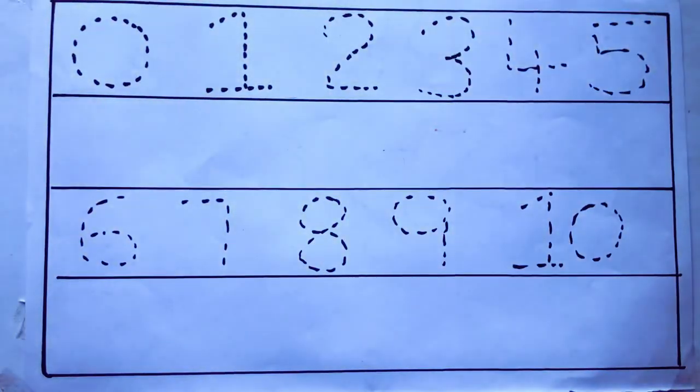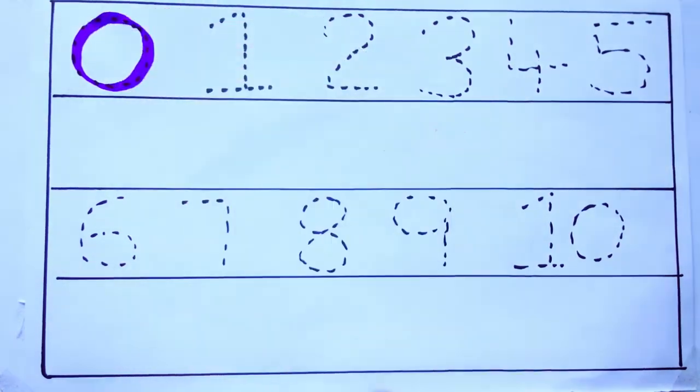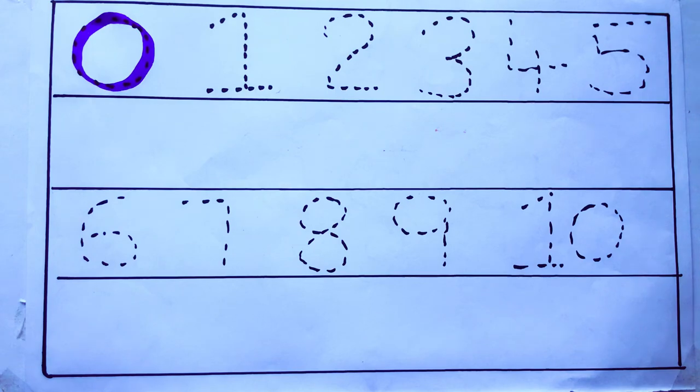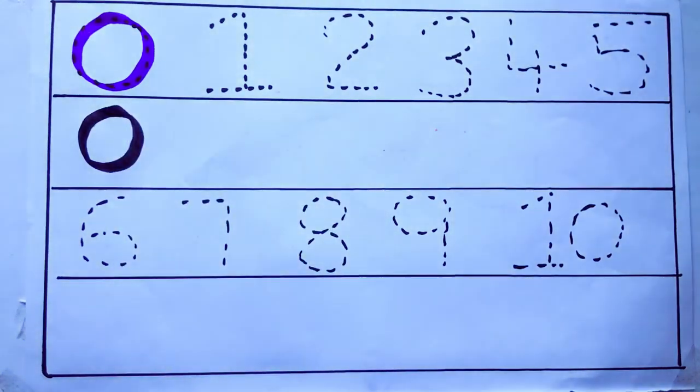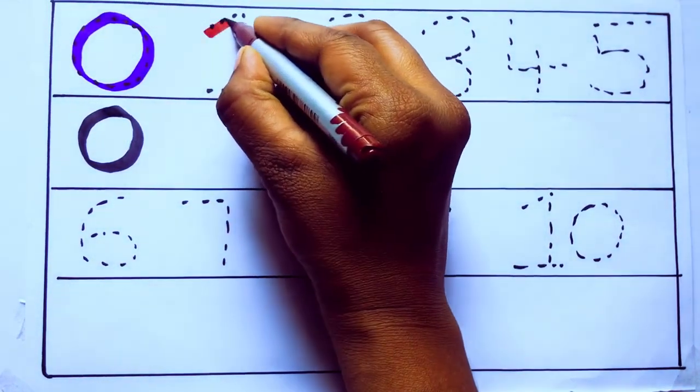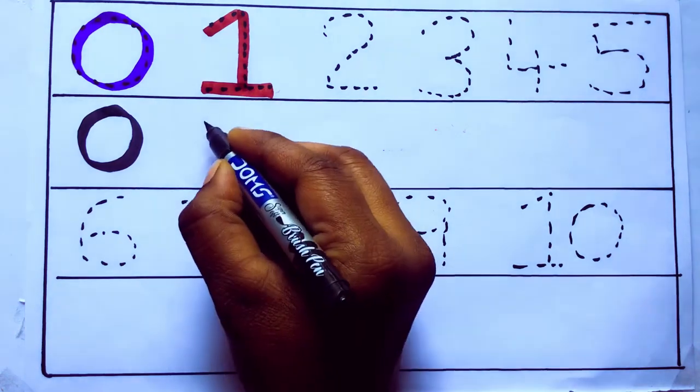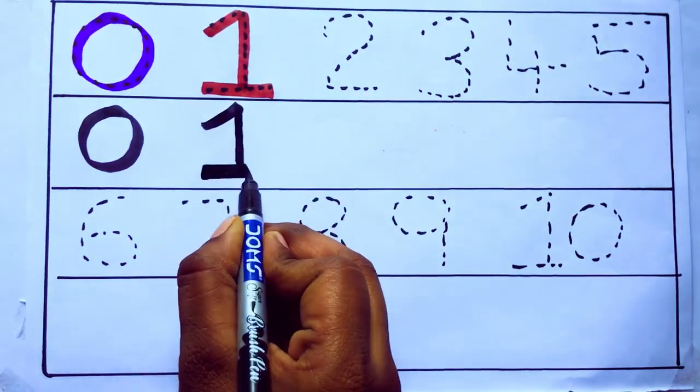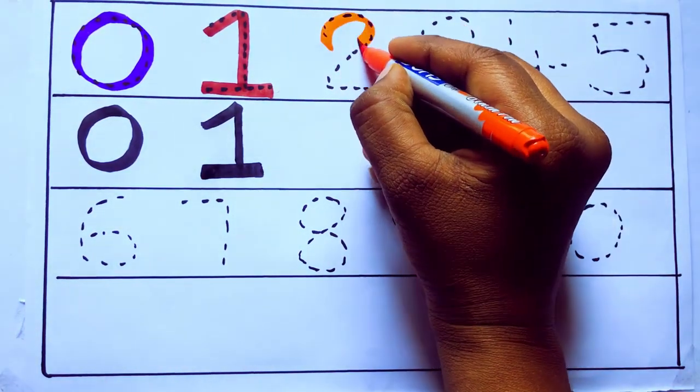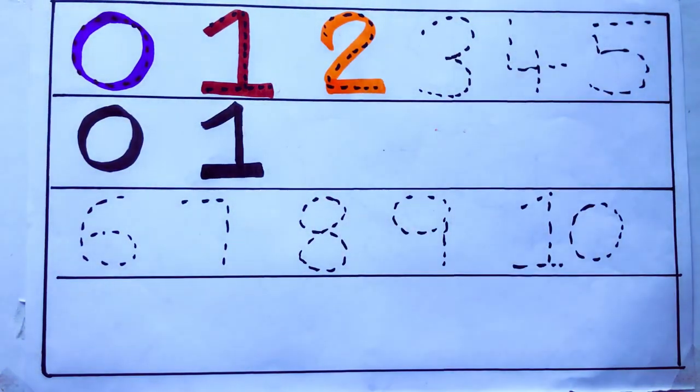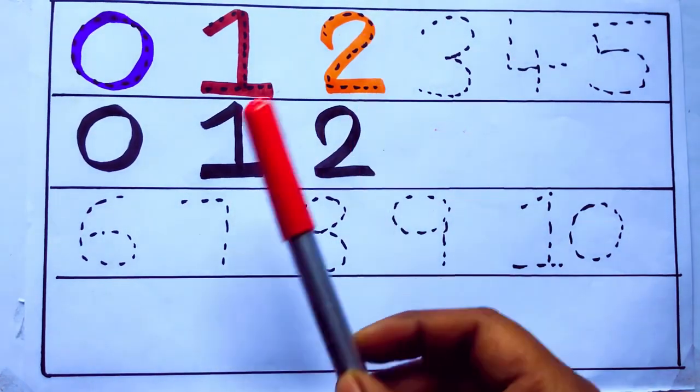Let's draw numbers. Violet color, 0, Z-E-R-O. 0, 0. Brown color, 1, O-N-E, 1. Number 1. Orange color, 2, T-W-O, 2. Number 2.